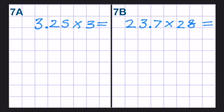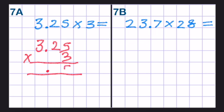Now we have decimals multiplied by whole numbers. The first one's one digit. The second one is two digits. Press pause then we'll do it together. So 3.25 times 3. 3 times 5 is 15. Carry the 1. 3 times 2 is 6 plus 1 is 7. 3 times 3 is 9. So it's 9.75.